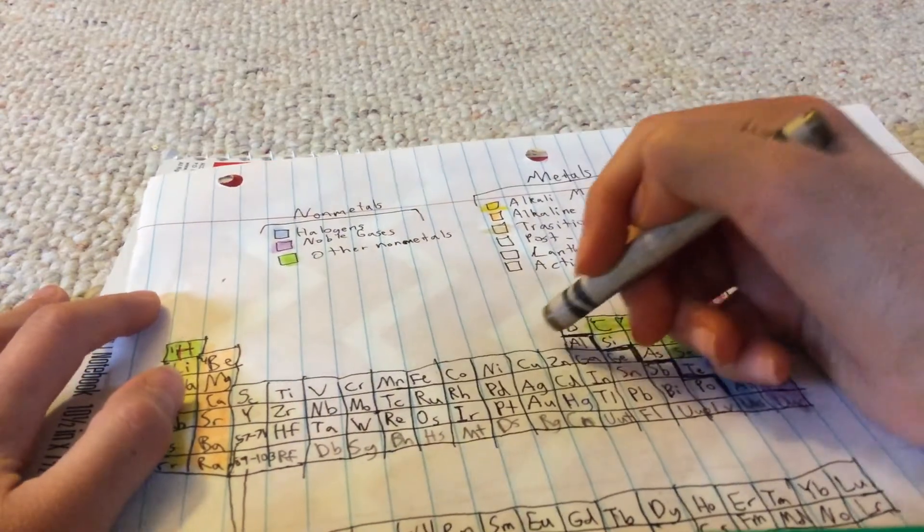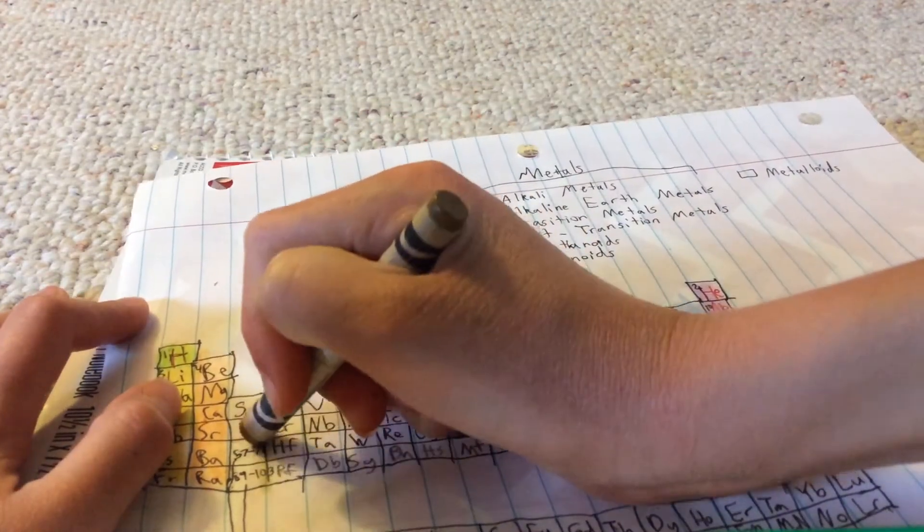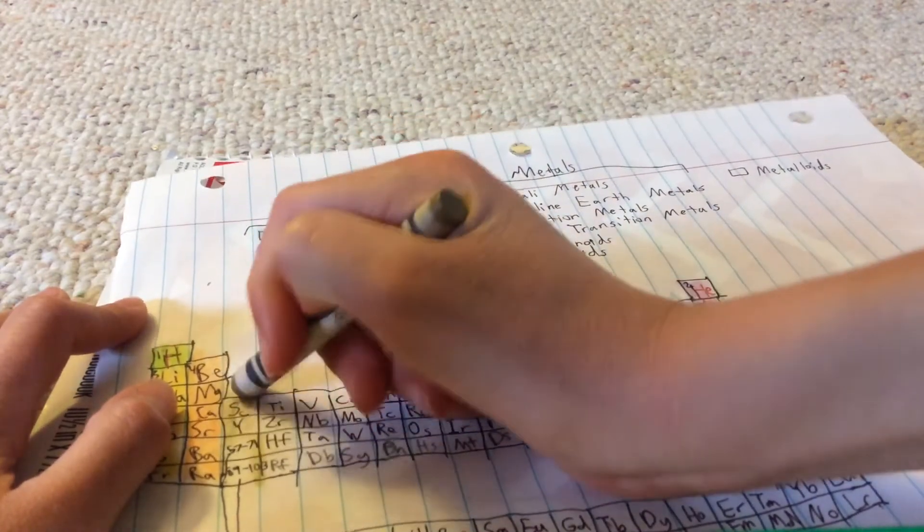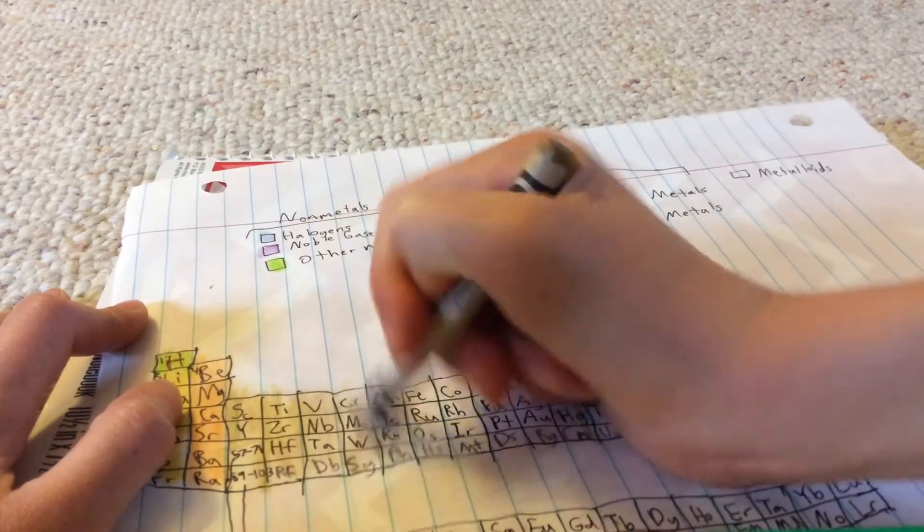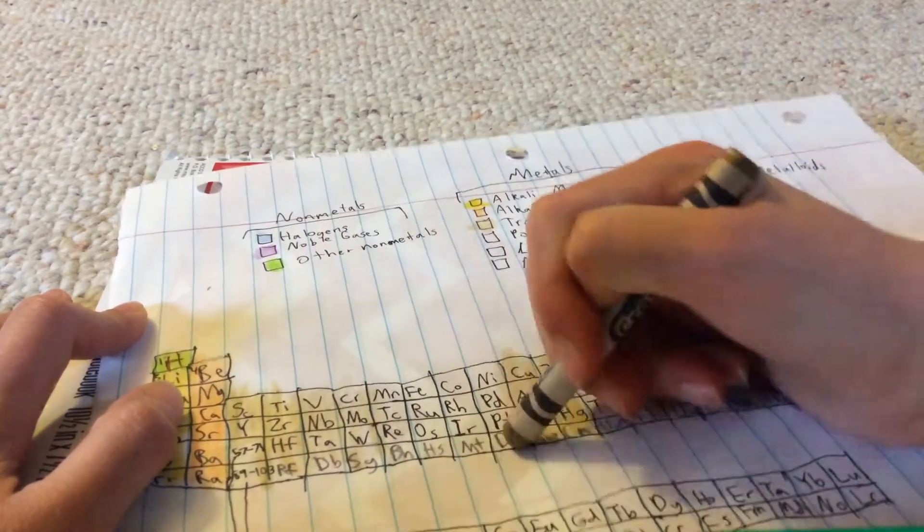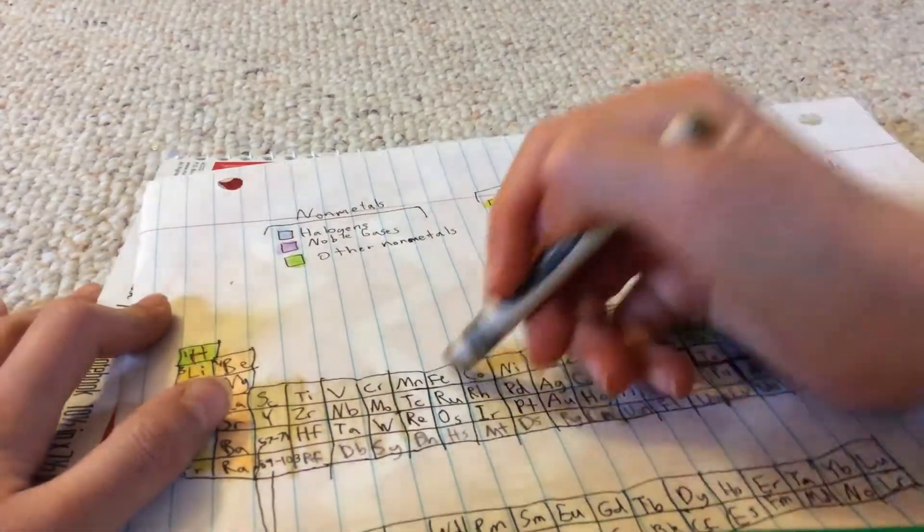Because gold is a transition metal. We're not gonna make the transition metals in the 57 to 71 because those are not, those are the lanthanoids and actinoids.